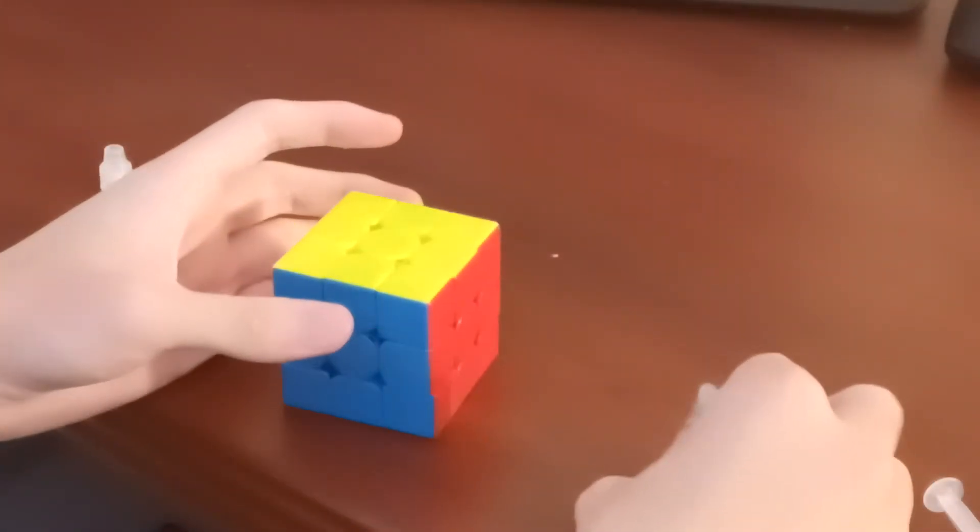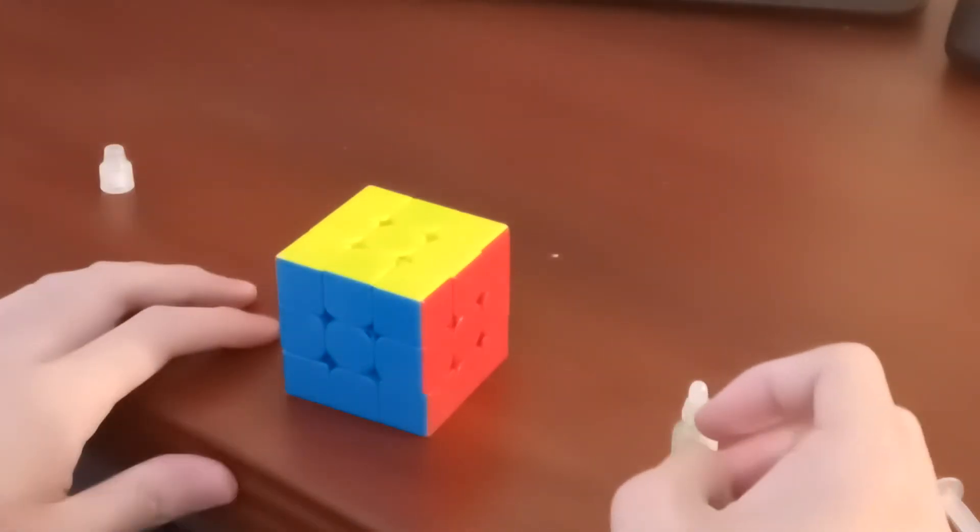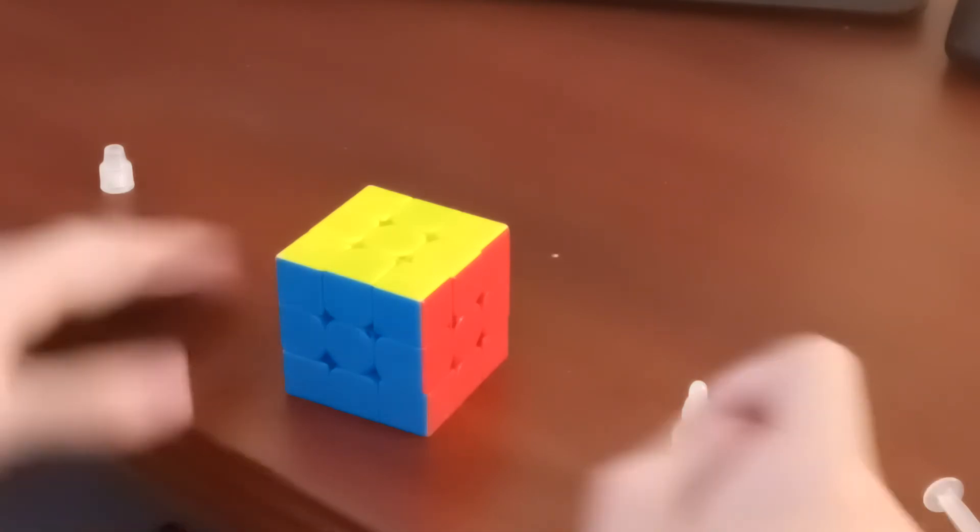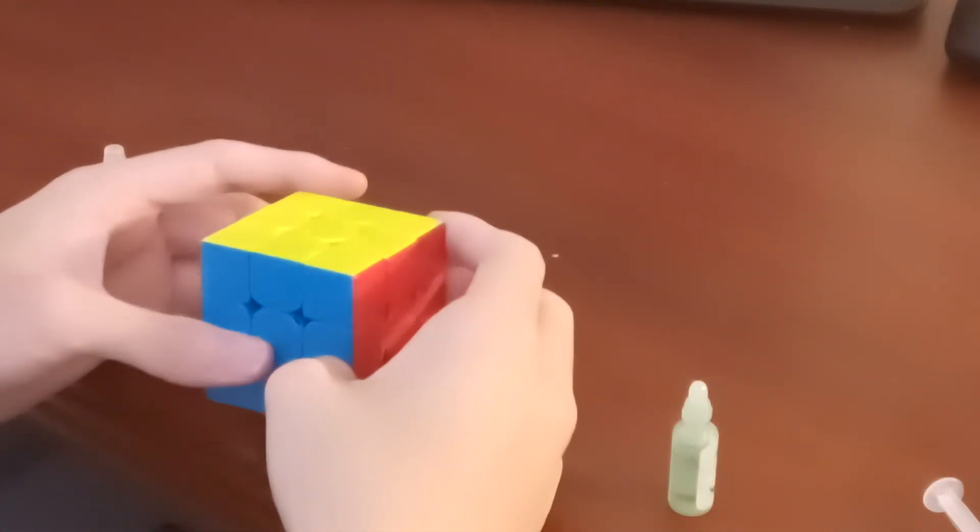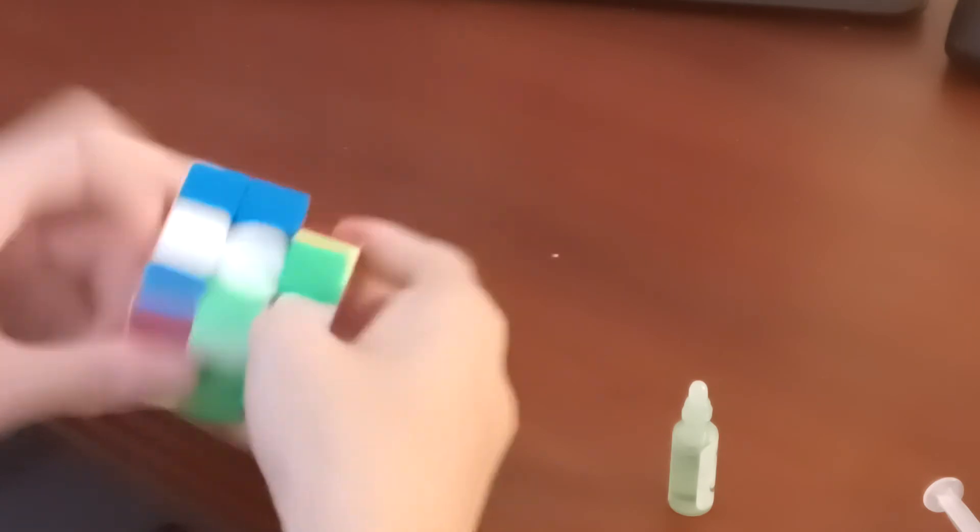Now I'd go two drops at a time just to make sure you don't over lube the cube, and after each two drops you would break it in, just by doing random turns.